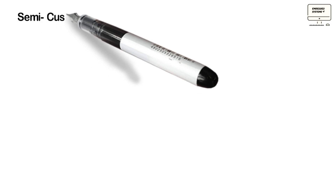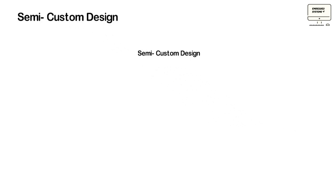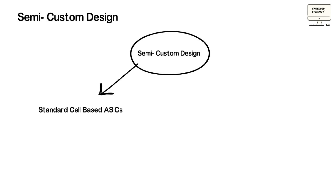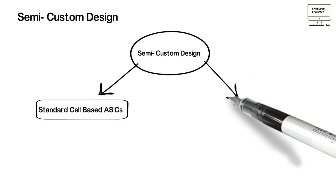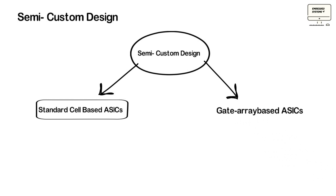Semi-custom design is an alternative to full custom designs. Here we can use components from a standard library for design purposes. In semi-custom ASIC designs, all logic cells are pre-designed and some mask layers are only customized. The advantage of using pre-designed logic cells from the library is that it can make semi-custom ASIC designs cheaper and easier. Standard cell libraries are usually designed using full custom designs.